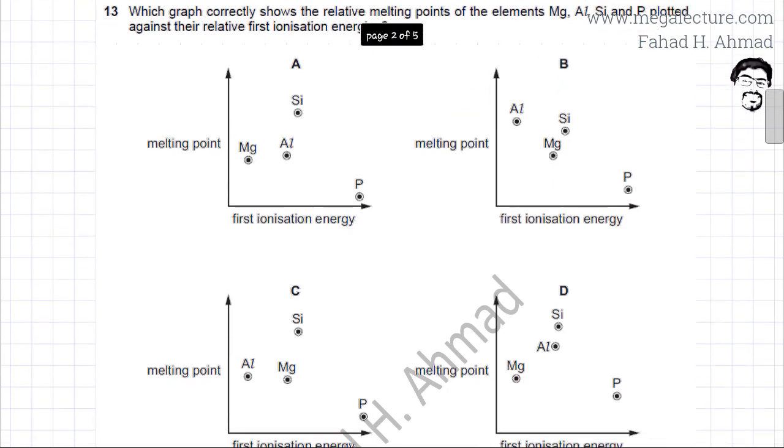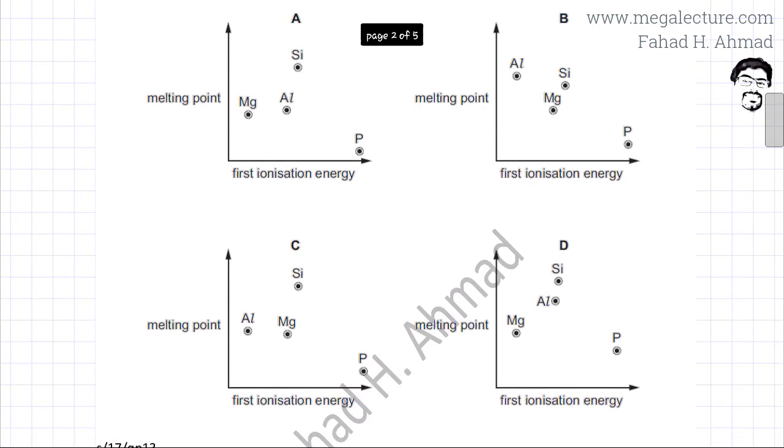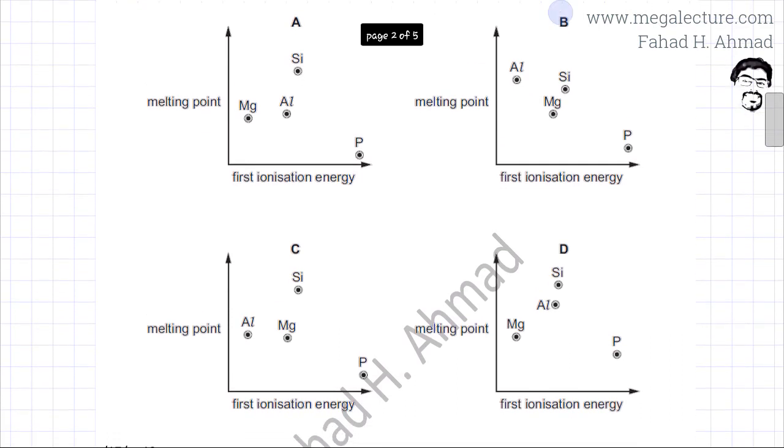So you're given four graphs and you have to figure out which of the graphs is the correct graph. This axis over here is the first ionization energy of the four elements and I'm going to focus on this horizontal axis first.